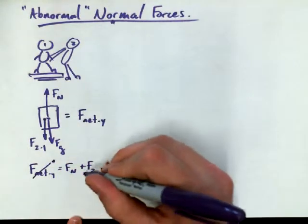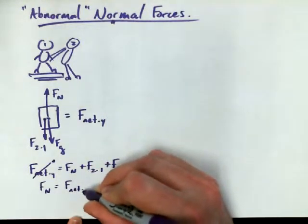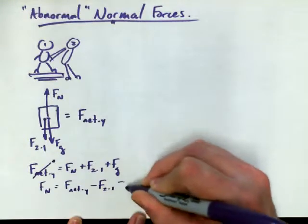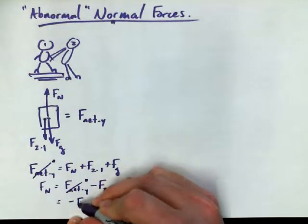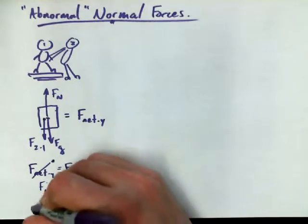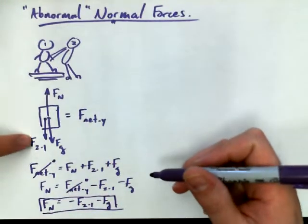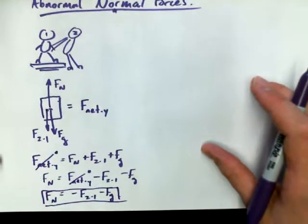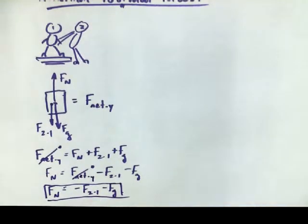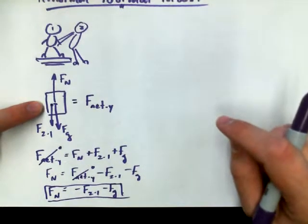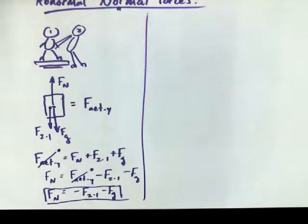And in that case, I could say, all right, well, if I want to know what Fn is, Fn, if I isolate for Fn, is equal to Fnet-y minus F2-on-1 minus Fg. And in this case, we may say that Fnet-y is equal to zero. So we say Fn is equal to negative F2-on-1 minus Fg. And it's true that Fn would have the same magnitude as the sum of those, but this addresses the fact that it would have the opposite direction. So it's useful to actually make use of this free body diagram like we have been up to this point, just to get a more full picture of things.